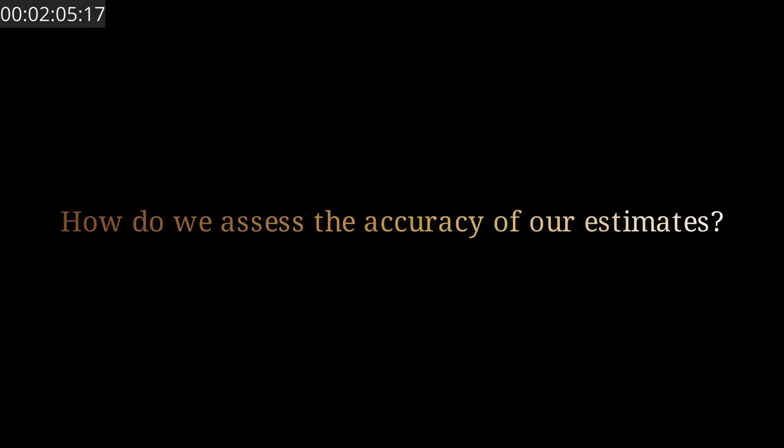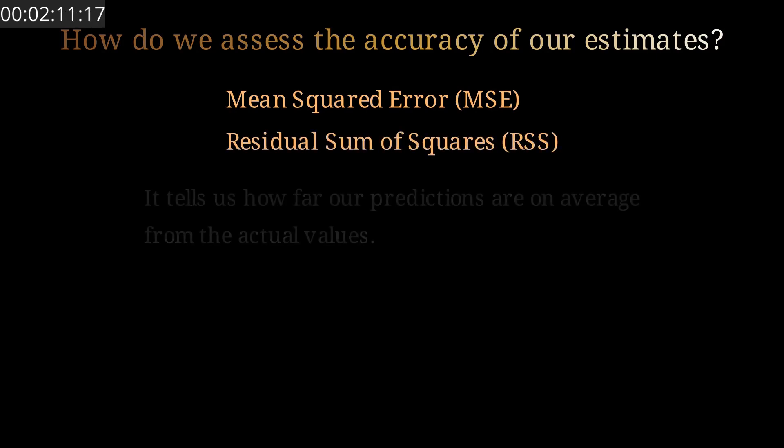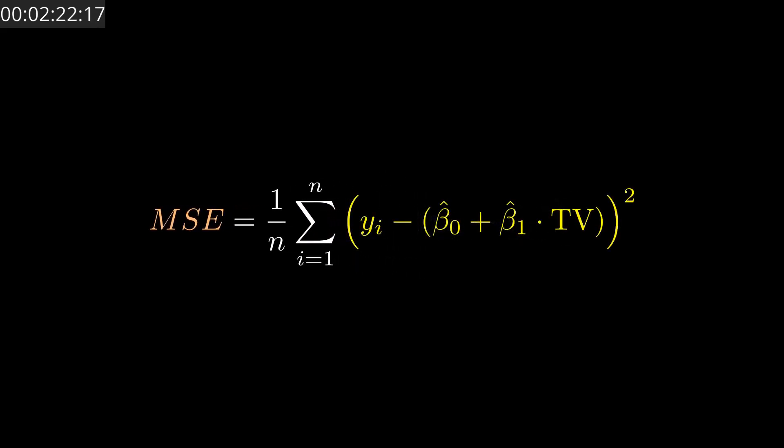Here we introduce the residual sum of squares, or the mean squared error. It's the difference between the actual sales and the predicted sales, given with this formula. And our goal is to estimate the coefficients that minimize the mean squared error as much as we can.